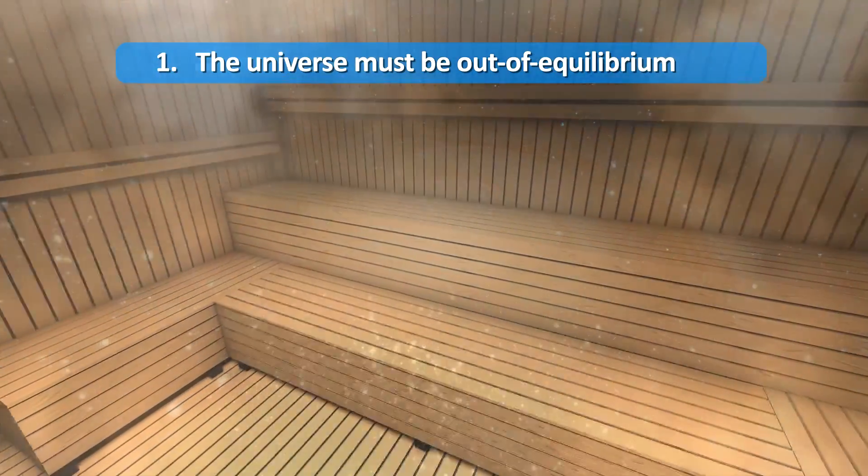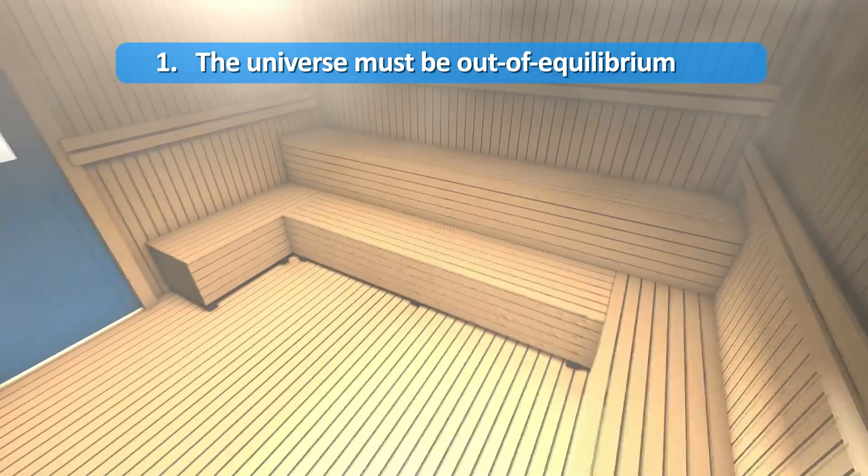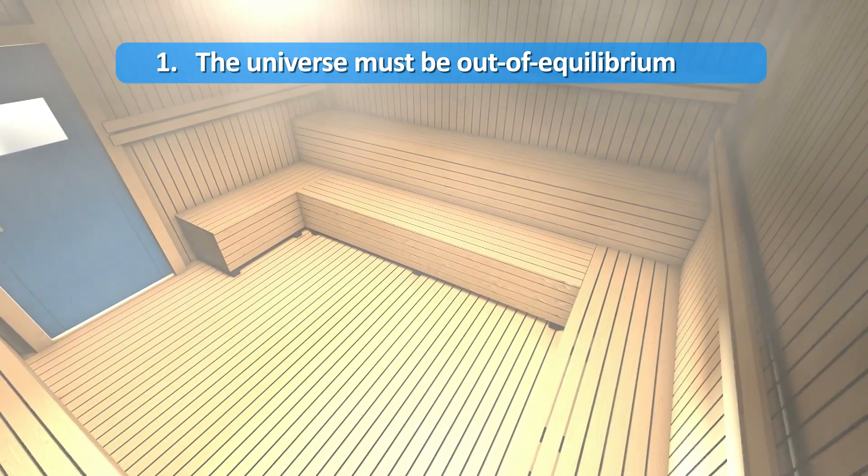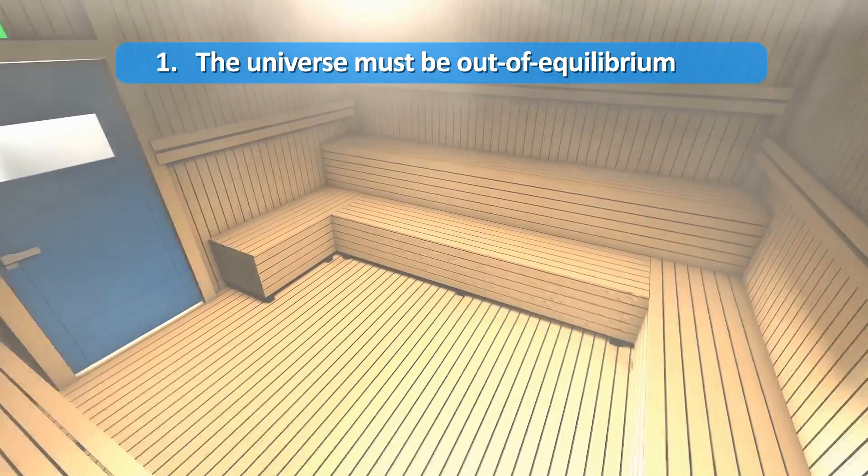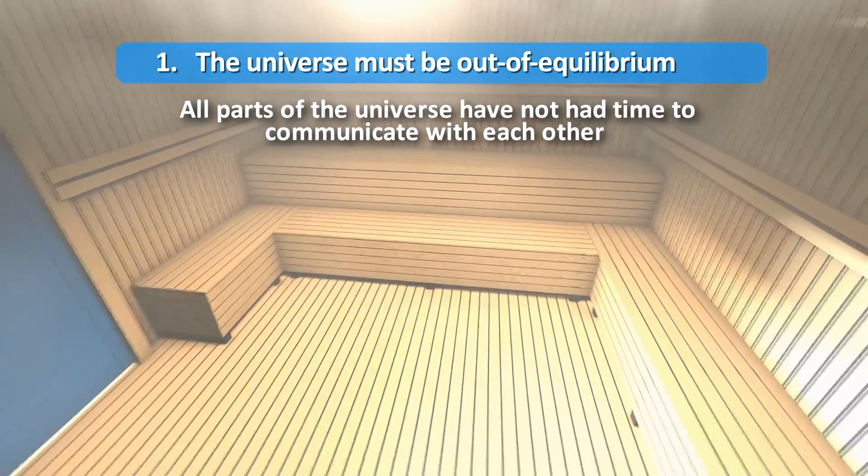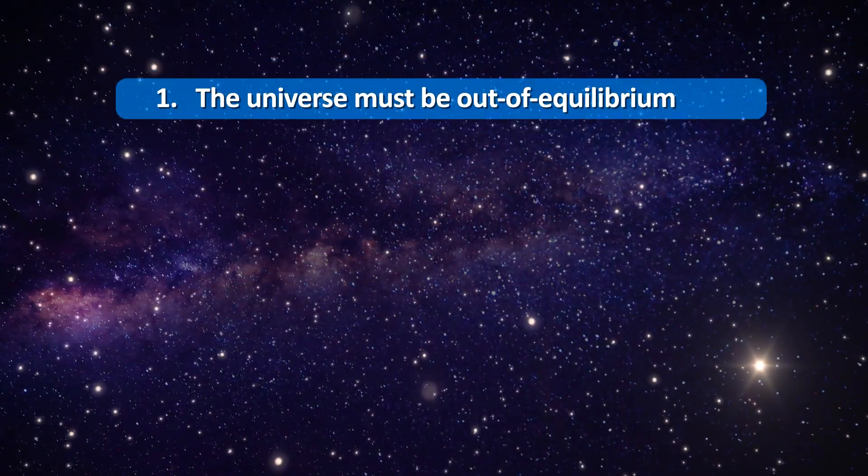Equilibrium only occurs when a system, like a room, has had enough time for all the different components in different locations to mix and interact with each other, such that energy is no longer being transferred from one part to another. In other words, all parts of the room have had time to communicate with each other. This has not happened for the universe.